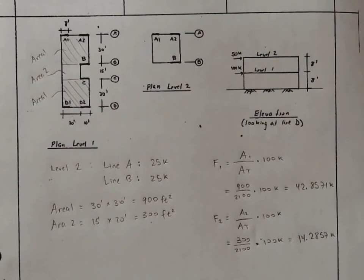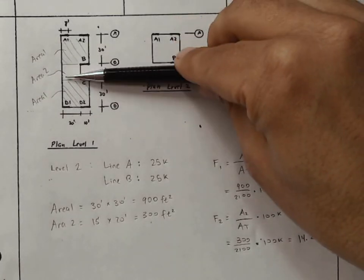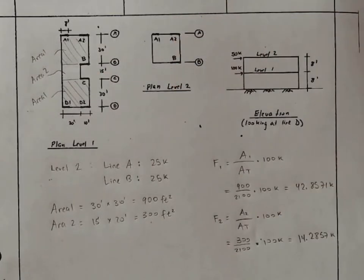So we're not quite done, we still need to see how we allocate the force to each of these lines of resistance, A, B, C. So let me sketch up a little diagram that'll make this a little bit more clear.